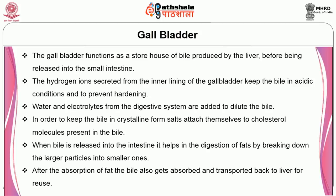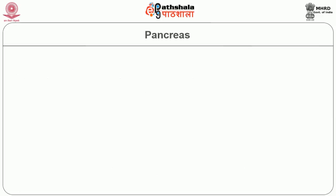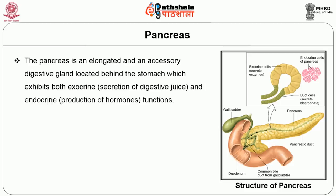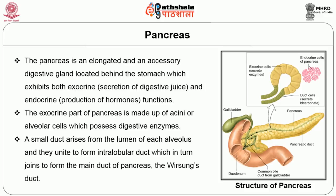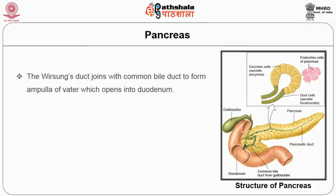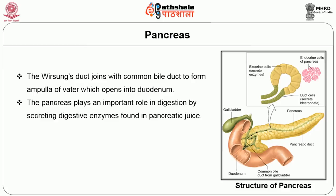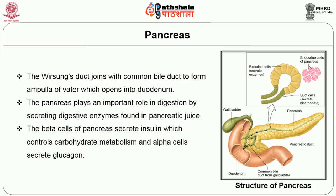The pancreas is an elongated accessory digestive gland located behind the stomach, which exhibits both endocrine and exocrine functions. The exocrine part of the pancreas is made up of acini or alveolar cells which possess digestive enzymes. A small duct arises from the lumen of each alveolus, and they unite to form intralobular ducts, which in turn join to form the main duct of the pancreas, the Wirsung's duct. The Wirsung's duct joins with the common bile duct to form the ampulla of Vater, which opens into the duodenum. The pancreas plays an important role in digestion by secreting digestive enzymes found in pancreatic juice. The beta cells of the pancreas secrete insulin, which controls carbohydrate metabolism, and alpha cells secrete glucagon.